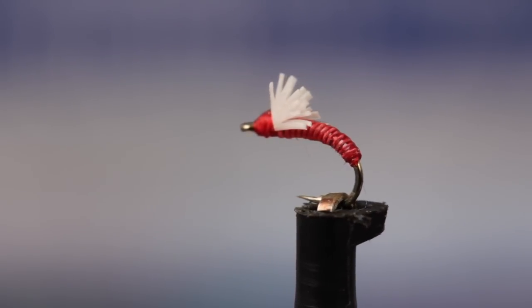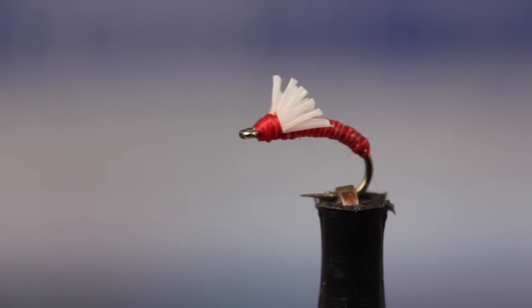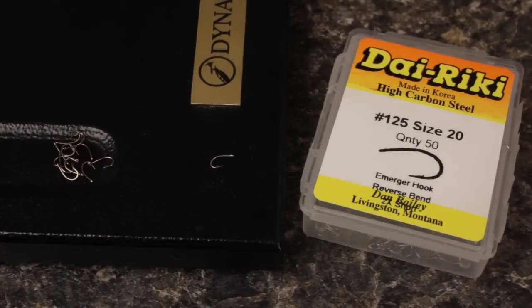For me, small sizes of this pattern work better than larger ones, so I tie them small. Here, I'm going to use a size 20 Dairiki number 125 emerger hook.